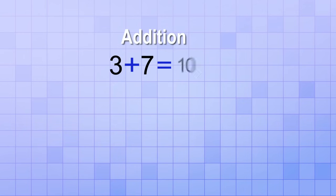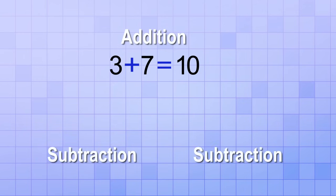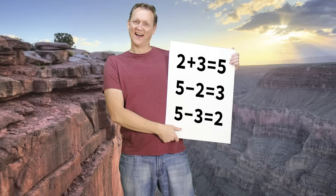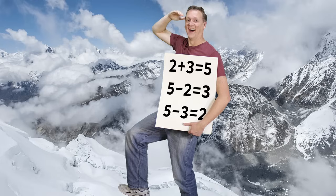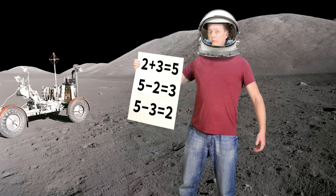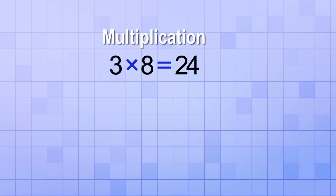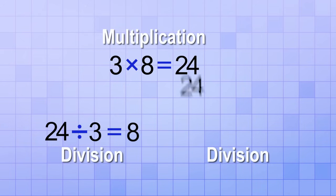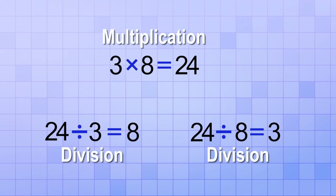For example, with addition, if you memorize the fact 3 plus 7 equals 10, then you'll also know two different subtraction facts — you'll know that 10 minus 3 is 7, and you'll also know that 10 minus 7 is 3. This group is sometimes called a fact family, because the facts are related. Likewise, with multiplication, if you memorize the fact 3 times 8 equals 24, then you'll also know two different division facts — you'll know that 24 divided by 3 is 8, and that 24 divided by 8 is 3. This is another fact family.